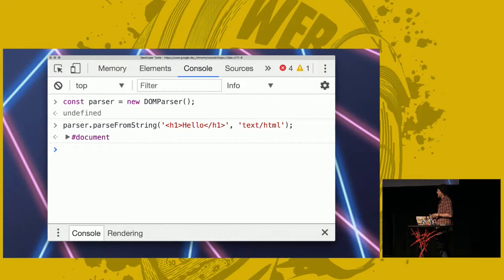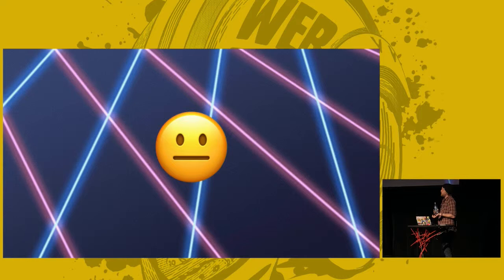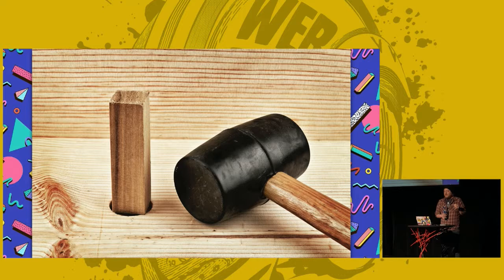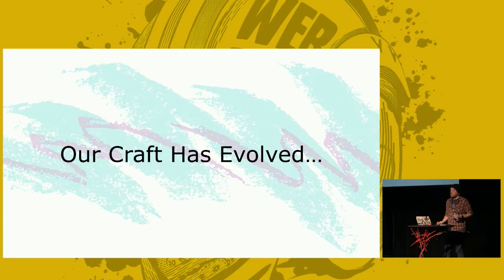The CSS Object Model drops anything it doesn't understand, and it's hard to navigate, underspecified, and doesn't give us everything we want. It kind of represents a little bit of the struggle of building for the web — we've taken this document viewer from the 90s and tried to turn it into the world's most widely distributed application platform, and there have been some bumps along the way. In JavaScript, we've dealt with it as our craft has evolved — we start to work around the problem, then build better tools, and eventually fix the problem.